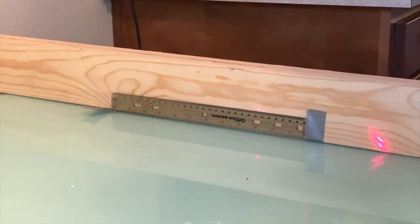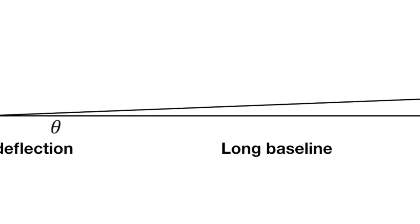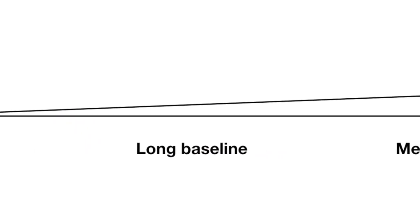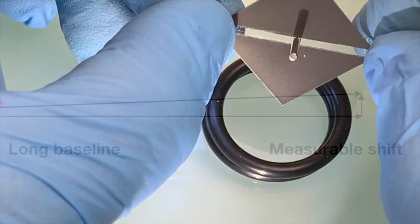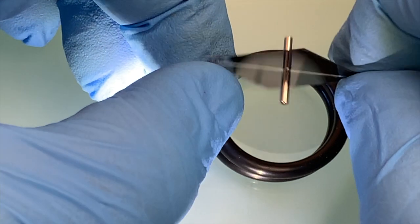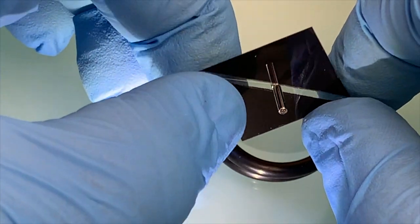This technique can achieve astonishing sensitivities, because with a large enough distance between the sensor and the screen, even the tiniest deflections can be detected. What may be even more remarkable is how cheap this torsion balance magnetometer is to make.